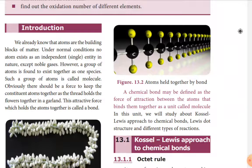We already know that atoms are the building blocks of matter. Any object in the universe is made up of atoms and molecules. Under normal conditions, no atom exists as independent — all atoms are in the form of molecules, except noble gases like helium, neon, and argon, because they have a stable electronic configuration in the outermost shell. A group of atoms found to exist together as one species is called a molecule.